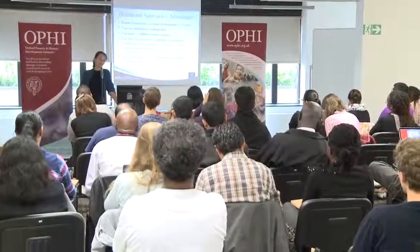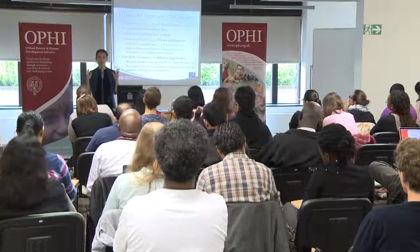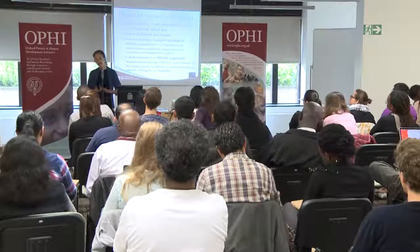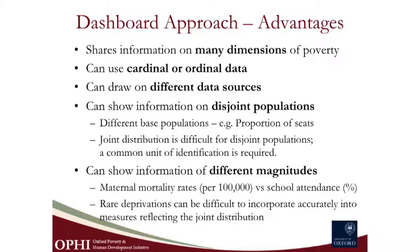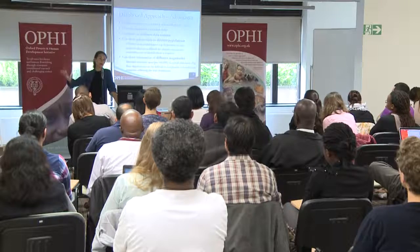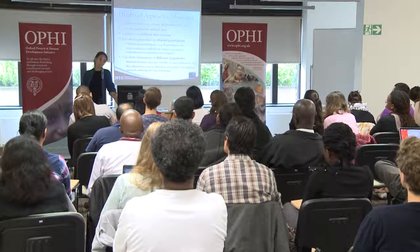What are the advantages of the dashboard approach? Martin Revalian in a 2011 article argued that anything that could be put into a unidimensional measure should, and that other things should be presented as elements of a dashboard. A dashboard can share information on other dimensions of poverty, reflecting the many dimensions of poverty. It can use cardinal data like income, or ordinal data like homicide rates. It can draw on different data sources: labour force surveys, special health surveys, consumption and expenditure surveys, DHS surveys, administrative data. It can also show information on disjoint populations.